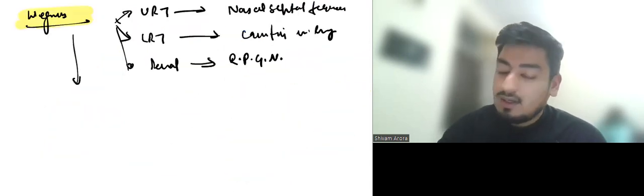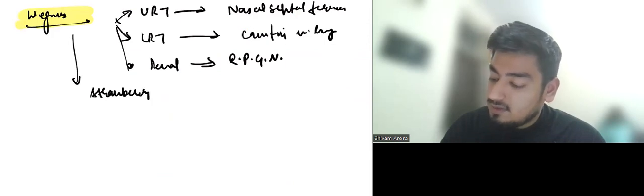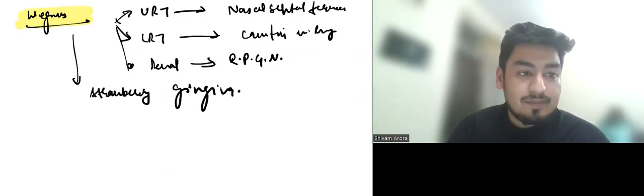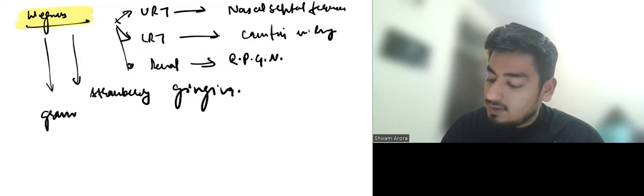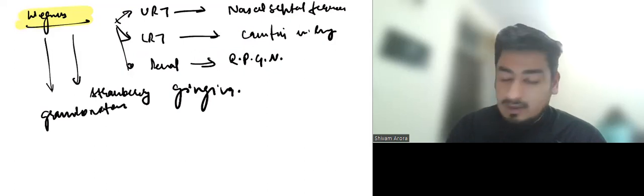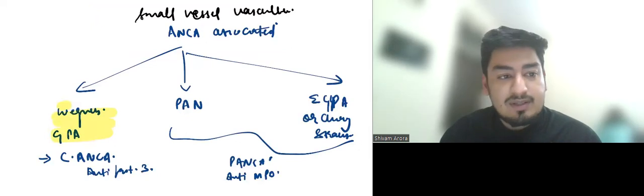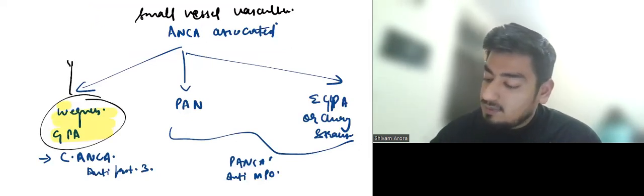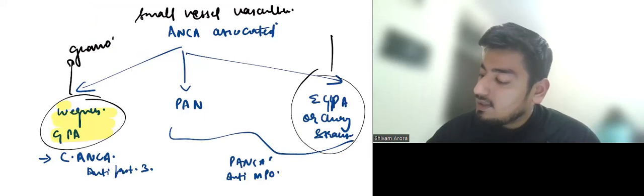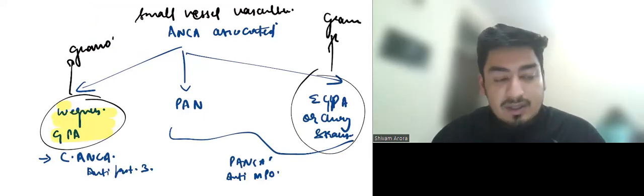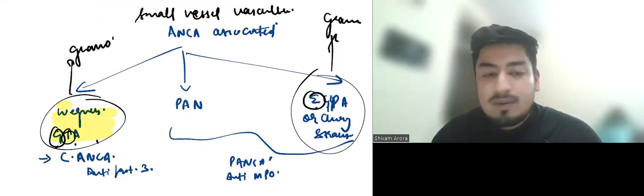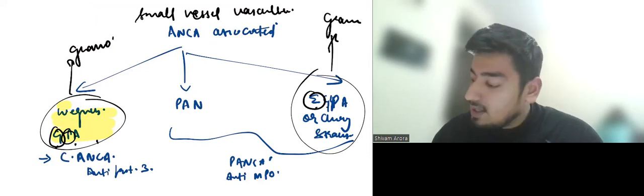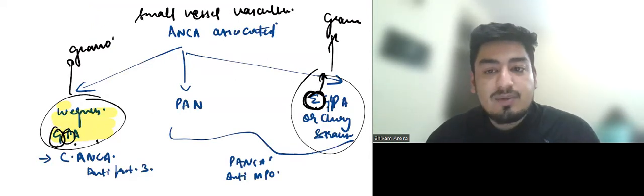In Wegener's strawberry gingiva is seen. One more thing about Wegener's is that it is a granulomatous vasculitis. So out of these three small vessel vasculitis, Wegener's is a granulomatous vasculitis, EGPA is a granulomatous vasculitis. GPA is a granulomatous vasculitis. EGPA means eosinophilic granulomatous vasculitis, so it is mostly associated with allergic symptoms or asthma symptoms.